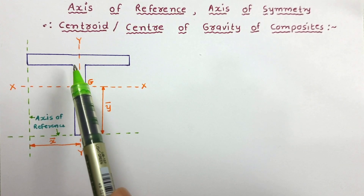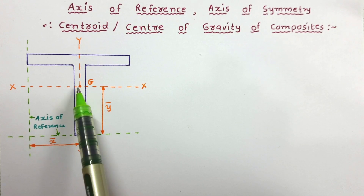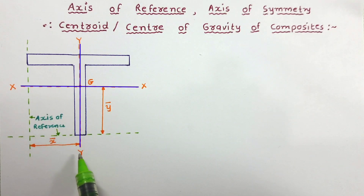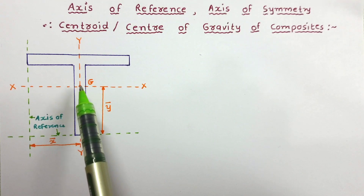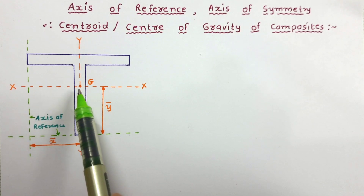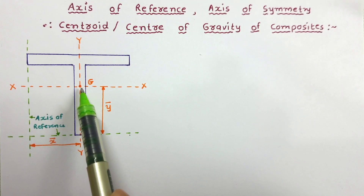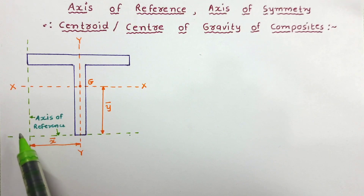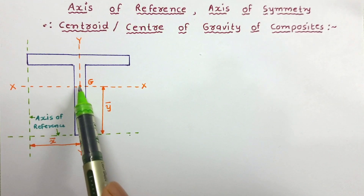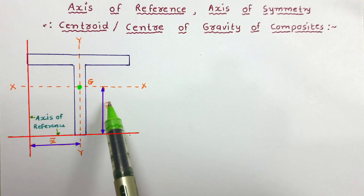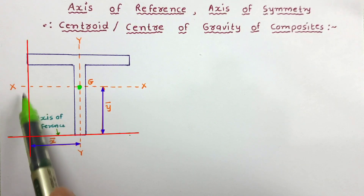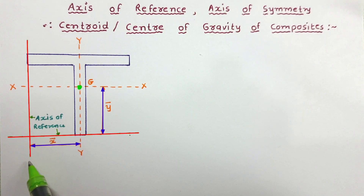So let us start with axis of reference. In this figure, the T-Section has been shown. This point is the centroid of T-Section. These two axes, XX and YY-Axis, are axes passing through the centroid of this T-Section. The centroid of any body is always calculated with reference to some assumed axis. Here, this is the centroid of T-Section, which is at Y-bar distance away from the reference X-axis, and it is X-bar distance away from the assumed Y-axis, or we can say vertical axis.